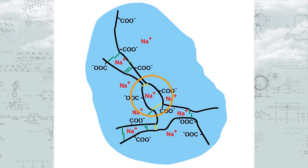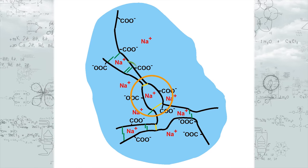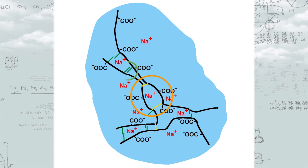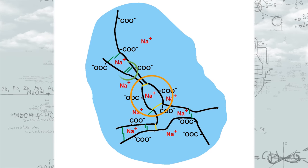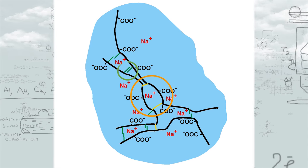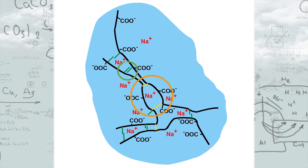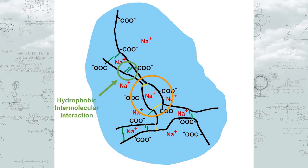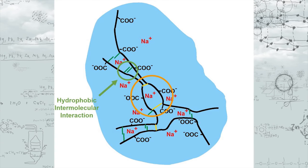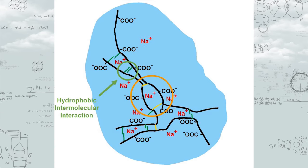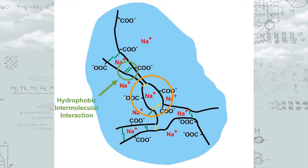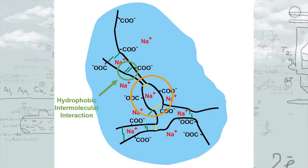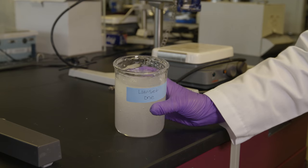Swelling by HASE thickening polymers is reinforced by the presence of hydrophobic chains. As these chains come in close vicinity, they interact with each other, resulting in hydrophobic intermolecular interaction. This entangles the polymer further and thus allows for thickening to be resistant to changes in electrolyte content.